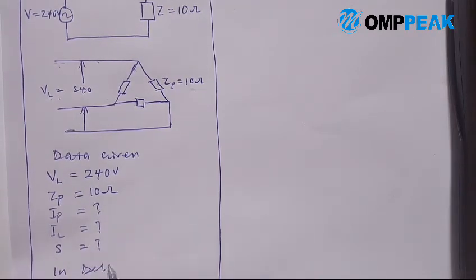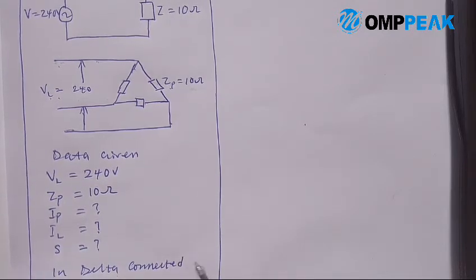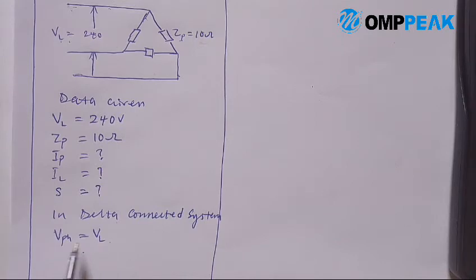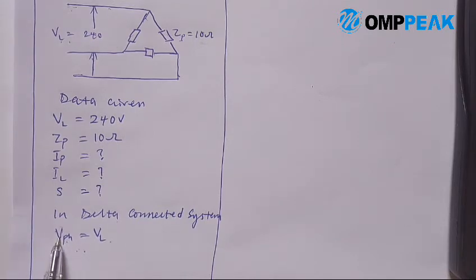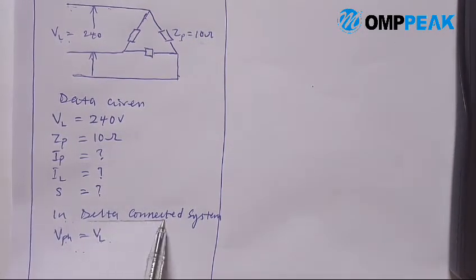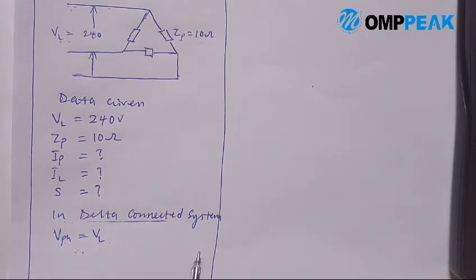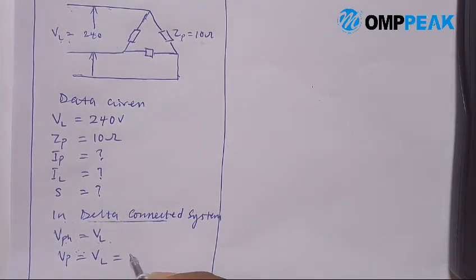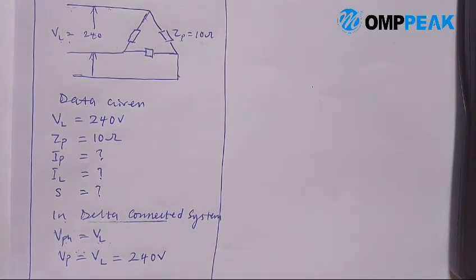In a delta connected system, Vph is equal to Vl. That is, the value given for phase voltage will be the same as the line voltage — only in a delta connected system. Since Vph equals Vl, therefore Vph equals 240 volts. Now let's calculate the phase current.